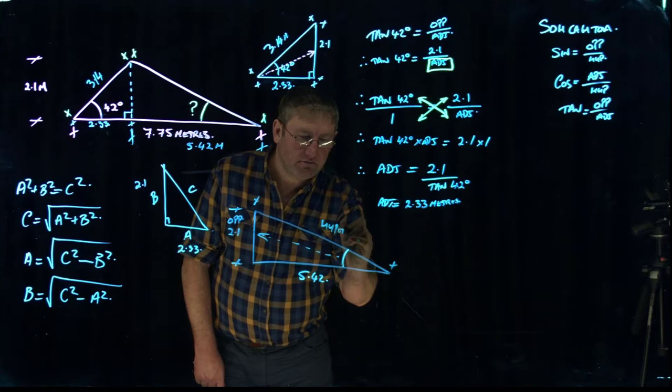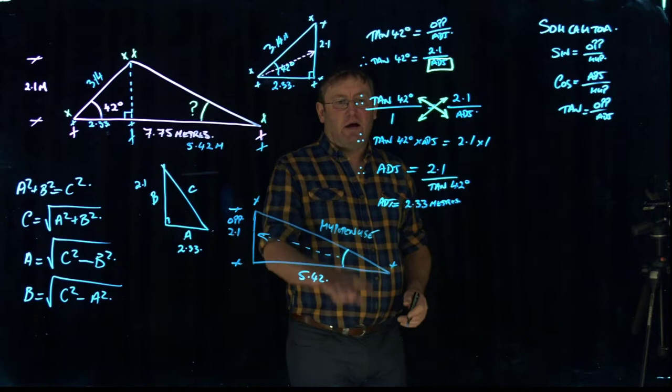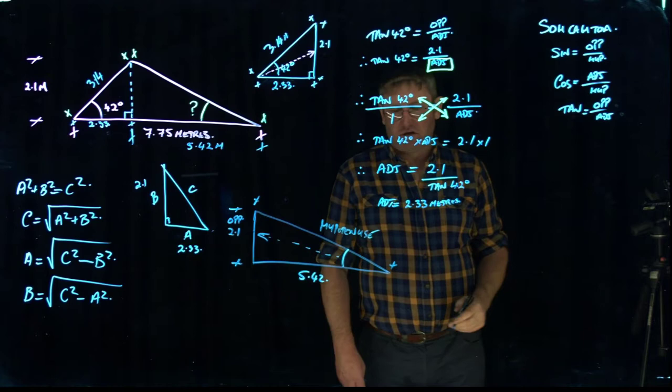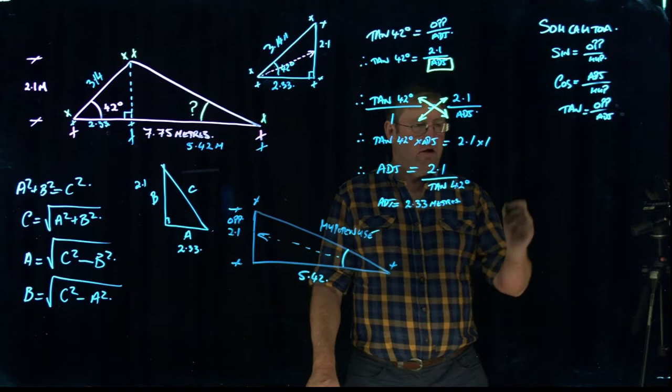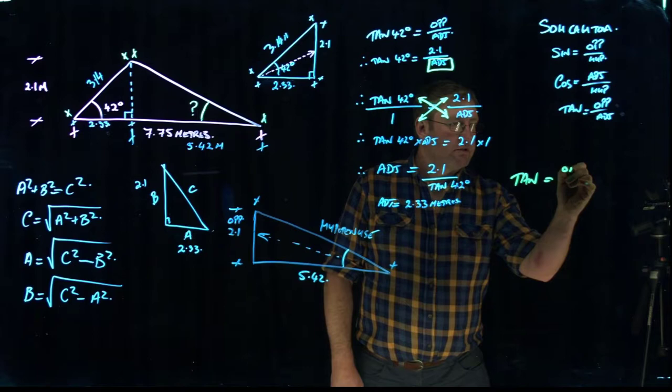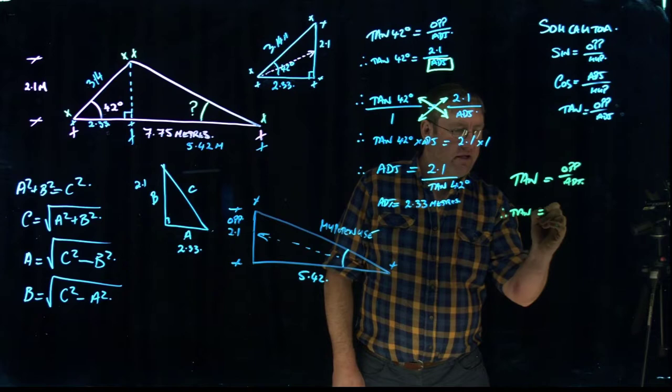So we're going to use tan again because we've got the opposite and we've got the adjacent and we're looking for the angle. So I'm going to rewrite that. So in this case it's tan. We don't know what that is. Equals opposite over adjacent. Therefore tan equals opposite as 2.1 divided by 5.42.